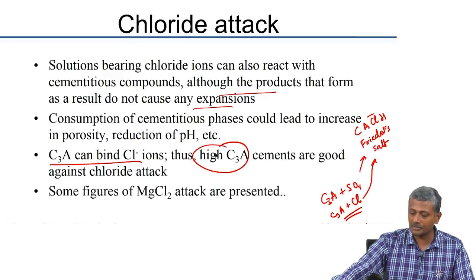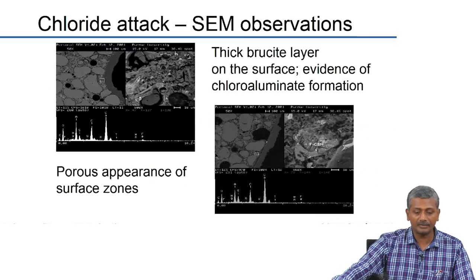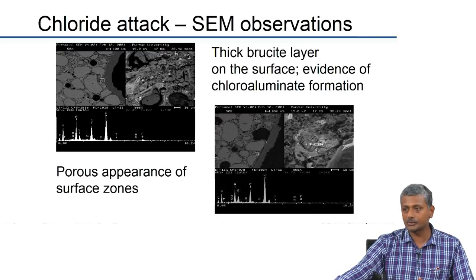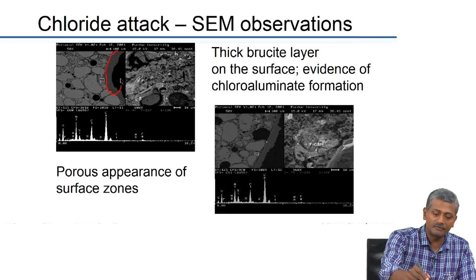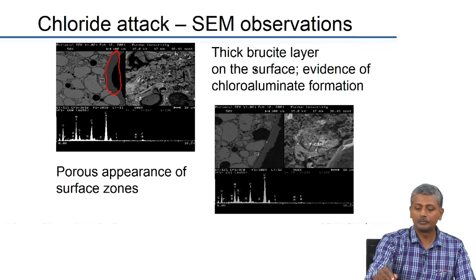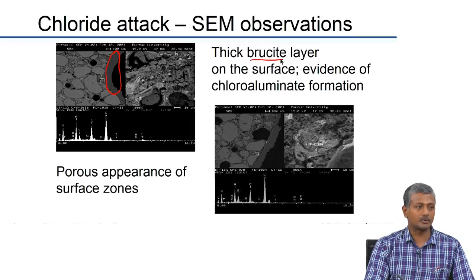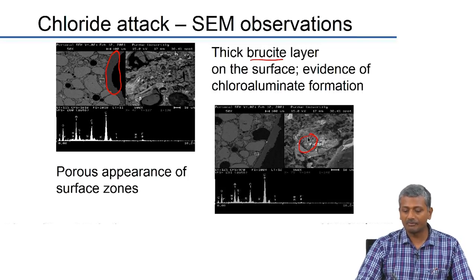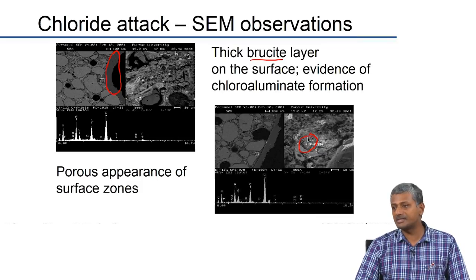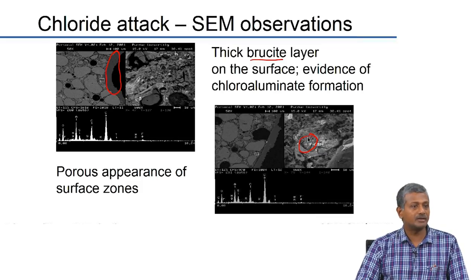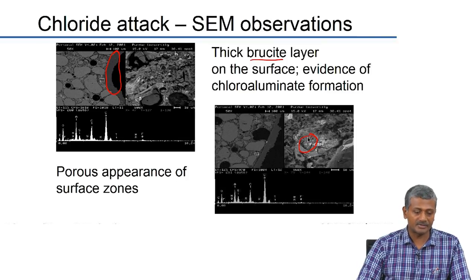In magnesium chloride attack, the magnesium ion is also involved, so you get formation of brucite (magnesium hydroxide) on the surface. There is also evidence of Friedel's salt formation (calcium chloroaluminate), sometimes mixed up with the CSH rather than found as a single deposit.